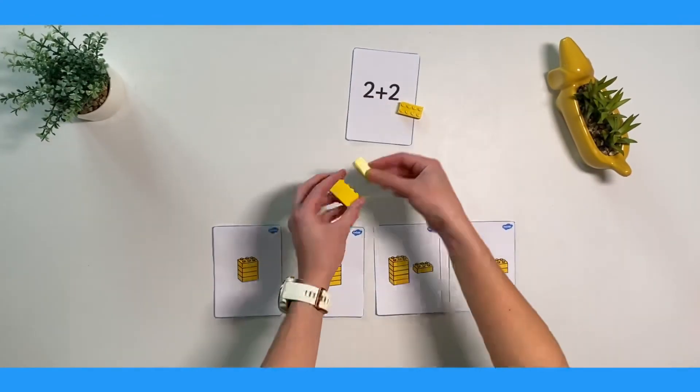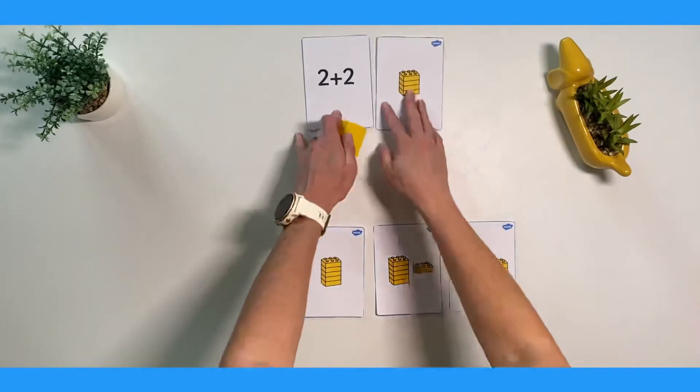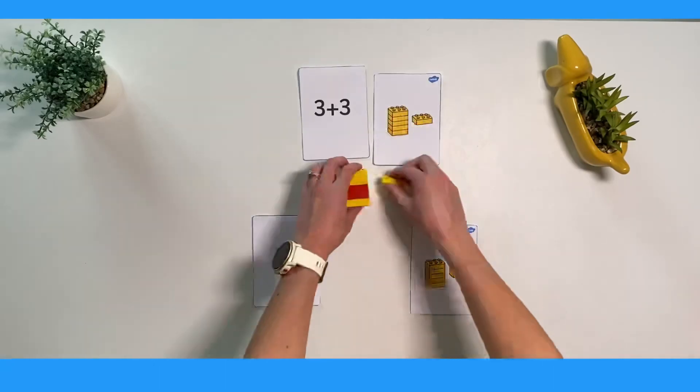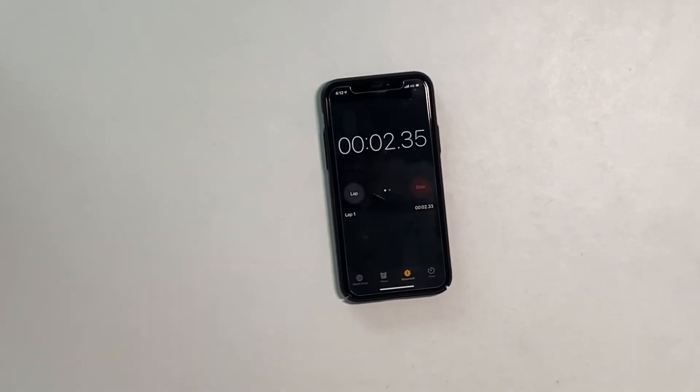Children can make what is shown on the card and then match this to the correct picture. You could even add in a timer and challenge children to see how quickly they can complete the matching activities.